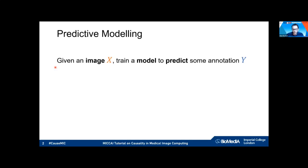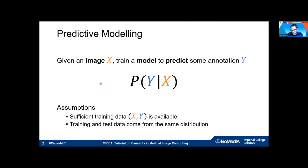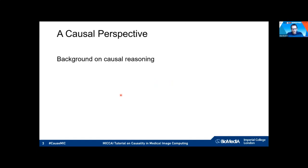What we are trying to do is build predictive models that take images and use a training dataset with annotations — x being the images, y the annotations — and build a model that approximates the conditional distribution. Given an image, can we predict the annotation y, for instance the disease label? This applies to tasks like image segmentation too. We assume sufficient training data is available and that training and test data come from the same distribution.